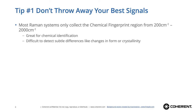My first tip is: don't throw away your best signals. It might seem kind of obvious, but actually most Raman systems only collect the chemical fingerprint region from 200 to about 2,000 wavenumbers. This is great for chemical identification, but it makes it difficult to detect subtle differences like changes in form or crystallinity for many materials.